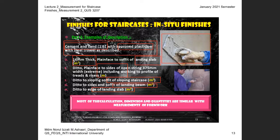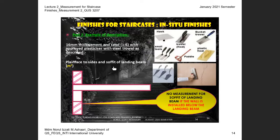General rule: if the unit of measurement is not stated in S.5, the unit must be in metre square. For example, the landing slab has no stated unit in S.5 so the general rule applies — measure in m². If the unit is not stated in S.5, use the general rule of metre square.